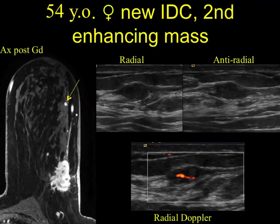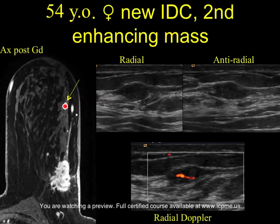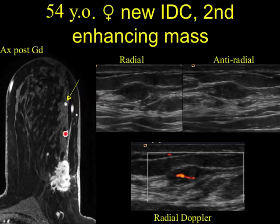Those are all good correlations. Here's another correlation with a small enhancing focus. We typically won't do second-look ultrasound for enhancing foci because the yield is low, but in this case, because of its superficial location and its relationship with a known breast cancer, we have a good idea of where to look. We find a very convincing correlate — an oval mass marginated by fat superficially and by dense tissue posteriorly — and we see vascularity within it. Not only that, but we can see a parallel vessel that we also see on MRI, using other landmarks to find the lesion in question.